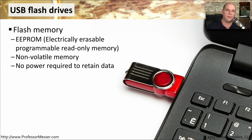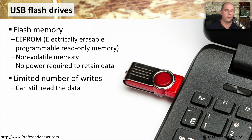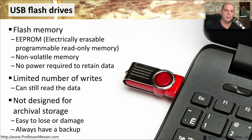One very popular storage type is the USB flash drive, where we're able to store a large amount of information in a very small portable package. It consists of flash memory, which is EEPROM — electrically erasable programmable read-only memory. A flash drive is non-volatile memory, meaning you don't have to constantly provide power for it to store information. One challenge with flash memory is that it only supports a certain number of writes; at some point, you would not be able to make any more writes, though you'd still be able to read the data. Although USB flash drives are very small and mobile, they're not ideal for archival purposes — they're easy to damage and easy to lose, so always have a backup of everything stored on that flash drive.